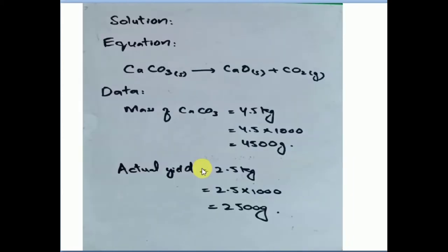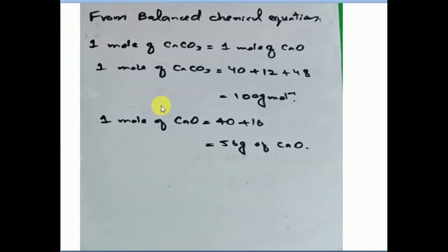So we have the data. The mass of CaCO3 is 4.5 kg. CaCO3 is converted into CaO and CO2. Now the kg which needs to be our unit is like this. So we have changed it in grams. The actual yield was 2.5 kg. We also changed it in grams.